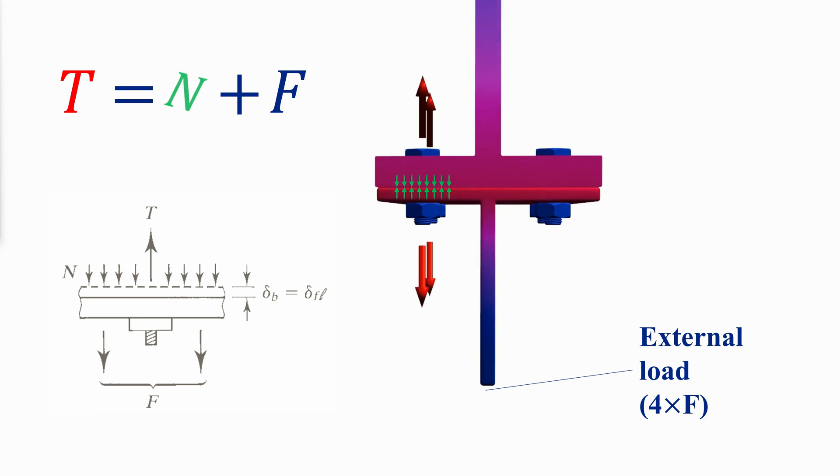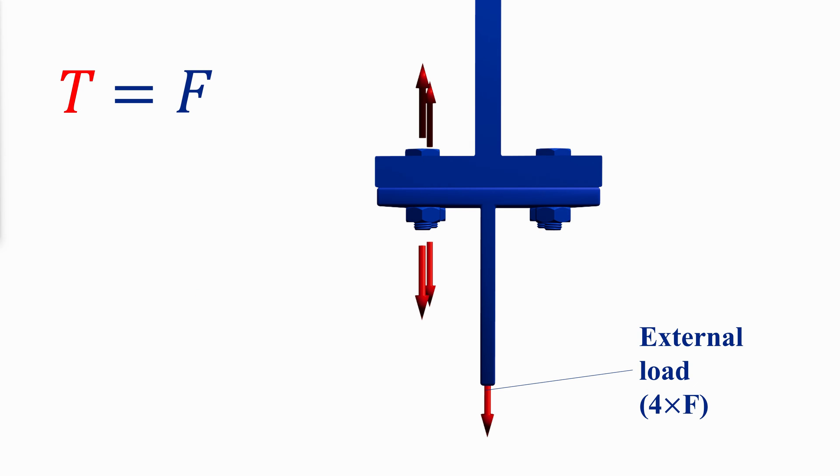As F increases, the tension in the bolt slightly increases and the compressive force decreases until it finally vanishes. At this point, the tension in the bolt is equal to the applied external force.